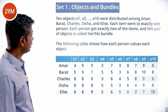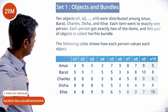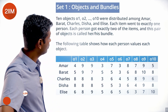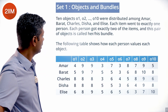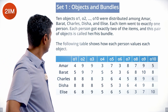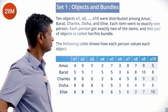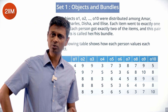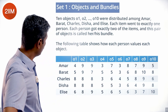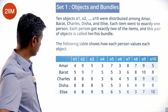10 objects O1, O2, O3 till O10 were distributed among Amar, Bharat, Charles, Disha and Elise. So 5 people, 10 objects — each item went to exactly one person, each person got exactly two of the items. This pair of objects is called their bundle. So if Elise gets O2 and O7, then O2 and O7 is Elise's bundle. The following table shows how each person values each object.